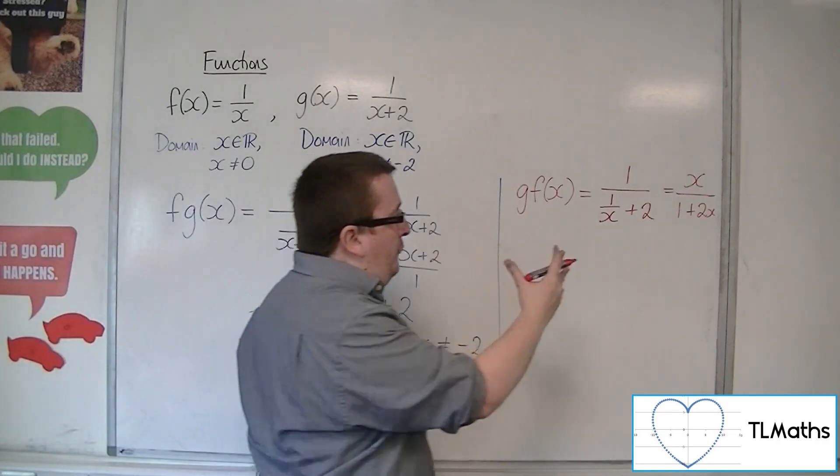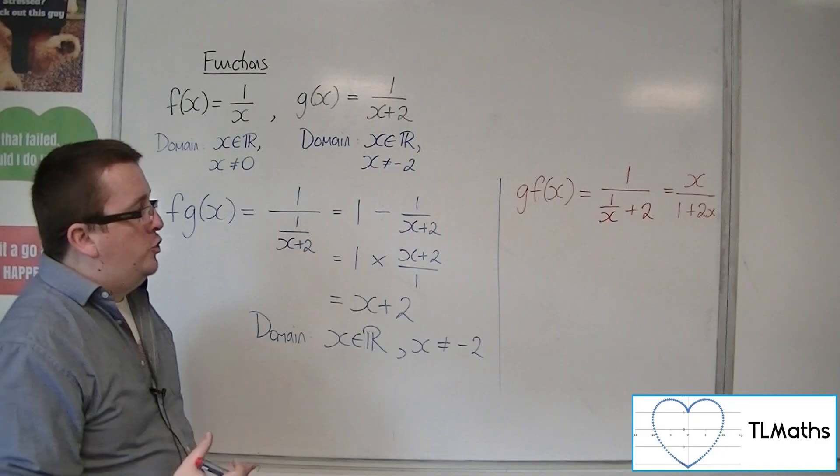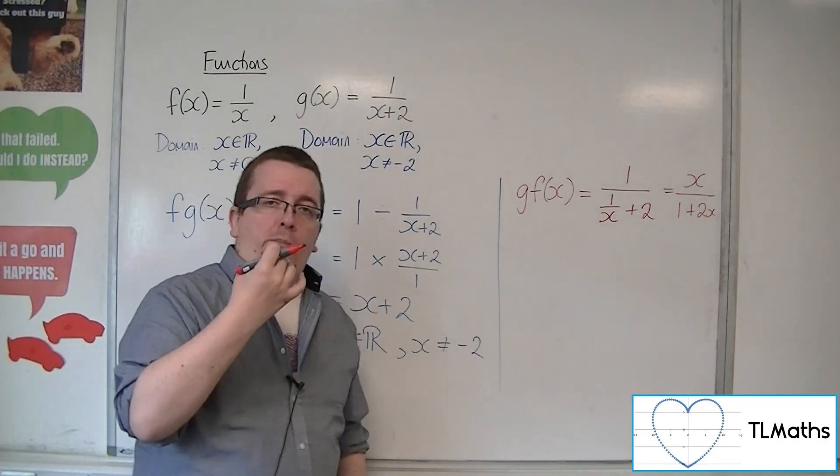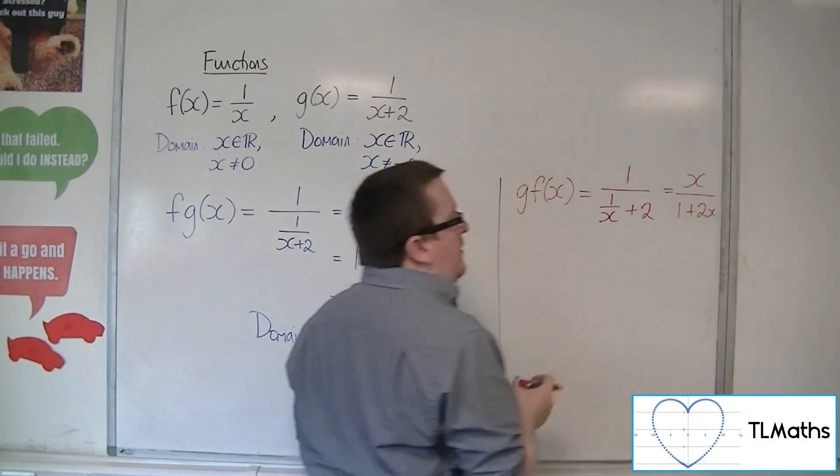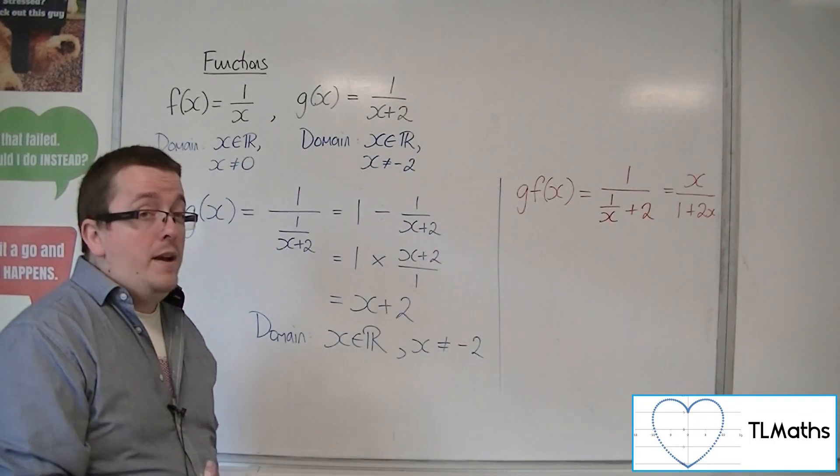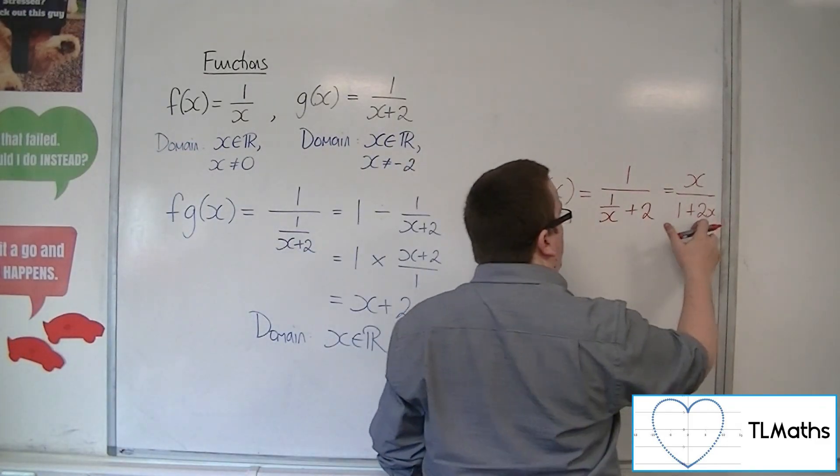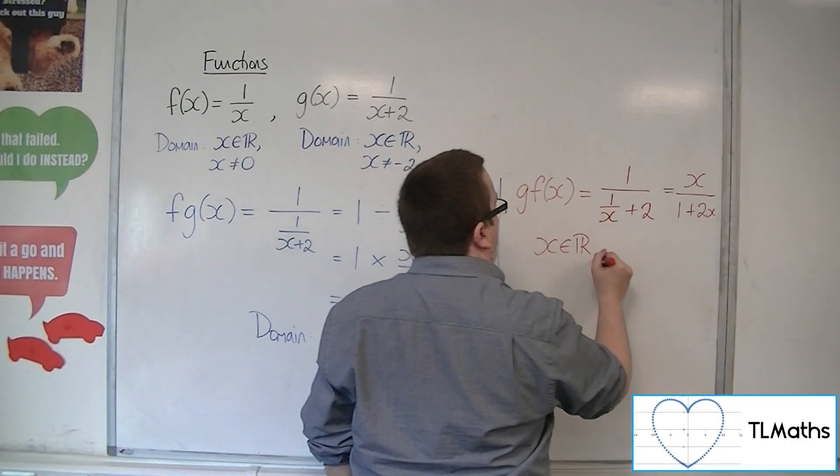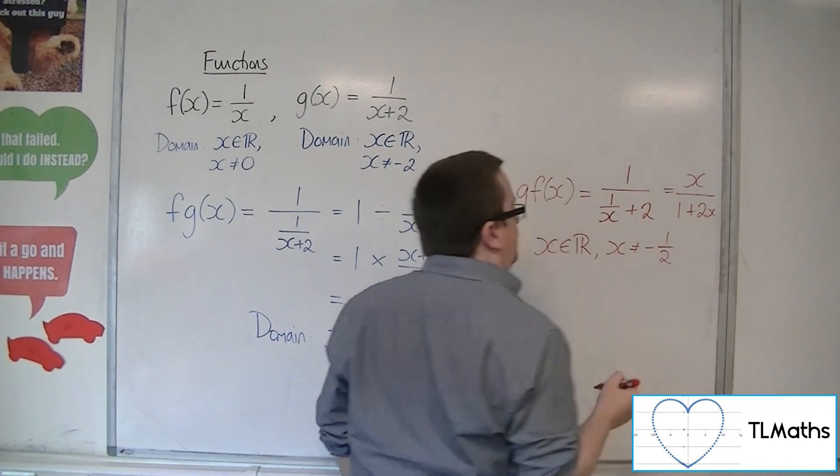Now, in this form, I can look at the domain of this function. The only values of x that are going to cause a problem are when that denominator is 0, and that's going to happen when x is minus 1 half. That's when I'm going to have 0 in the denominator. So x can be any real value apart from minus 1 half.